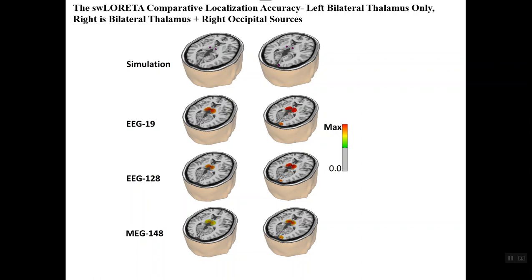This is an example of the inverse solution comparisons between different number of channels. The left column, those are sources that are put into the left and right thalamus. The right column has the left and right thalamic sources, but in addition, a right occipital source. We're comparing 19 channel source localization to 128 channel source localization. When I was at the National Institutes of Health, I was the project manager for the first 128 channel EEG system. We compared 19 channels to 32 to 64 to 128 to 256. Above 32, there's not hardly any improvement. There's not a lot of difference between 19 and 32. As you can see here, there's not a lot of difference in source localization accuracy between 19 and 128.